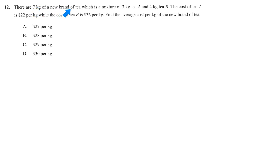There are 7 kg of a new brand of tea which is a mixture. It comes from 3 kg tea A and 4 kg tea B. They give you the cost of A and B respectively per kg, and we're going to find the average cost of the new brand.